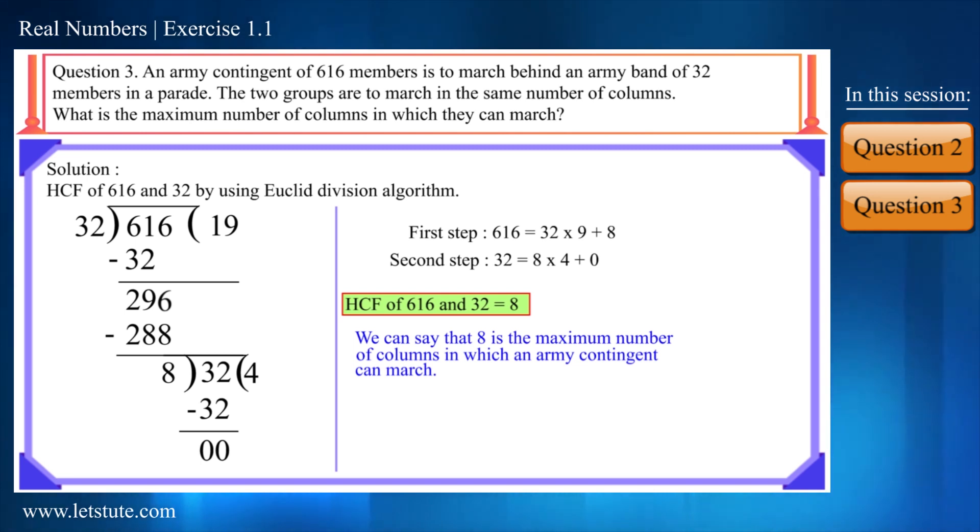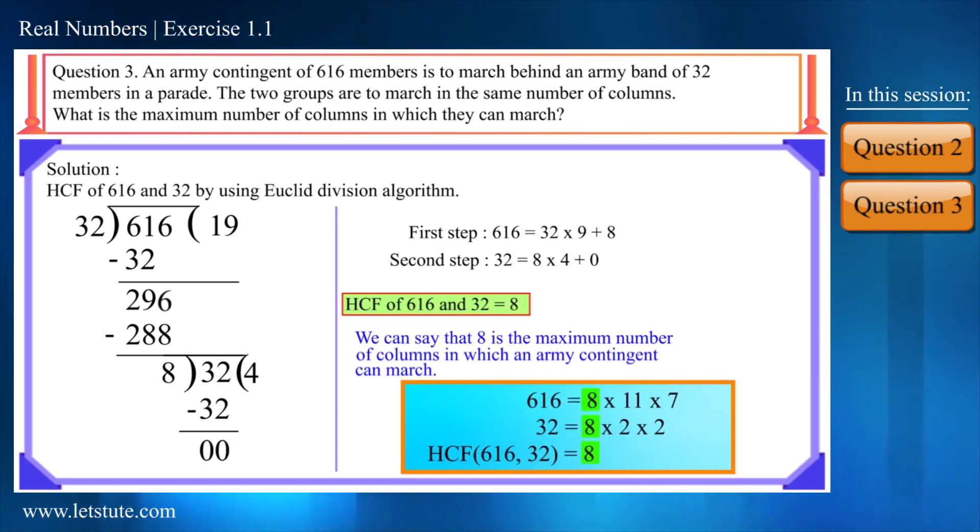Therefore we can see that 8 is the maximum number of columns in which an army contingent can march. You can also verify your answer by determining the HCF using the factorization method. Now here we got the final solution for this question.